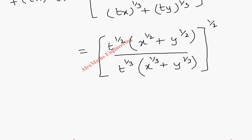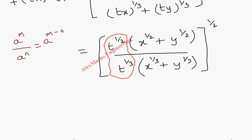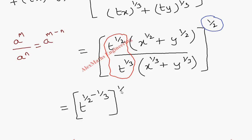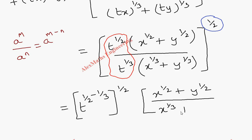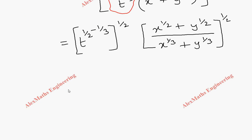This power 1/2 can be carried to the t terms as well as the remaining terms. Using the rule a^m / a^n = a^(m−n), we subtract the powers: t^(1/2 − 1/3). The remaining term is (x^(1/2) + y^(1/2)) divided by (x^(1/3) + y^(1/3))^(1/2), which is nothing but the original function f(x, y).